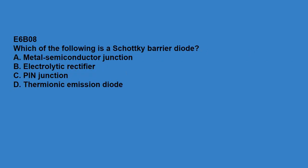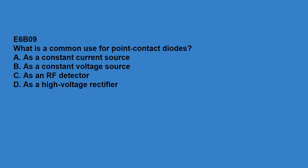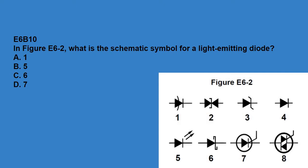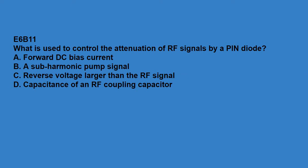E6B08: which of the following is a Schottky barrier diode? A metal semiconductor junction. E6B09: what is a common use for point contact diodes? As an RF detector. E6B10: in figure E6-2, what is the schematic symbol for a light-emitting diode? Answer is 5. E6B11: what is used to control the attenuation of RF signals by a PIN diode? Forward DC bias current.